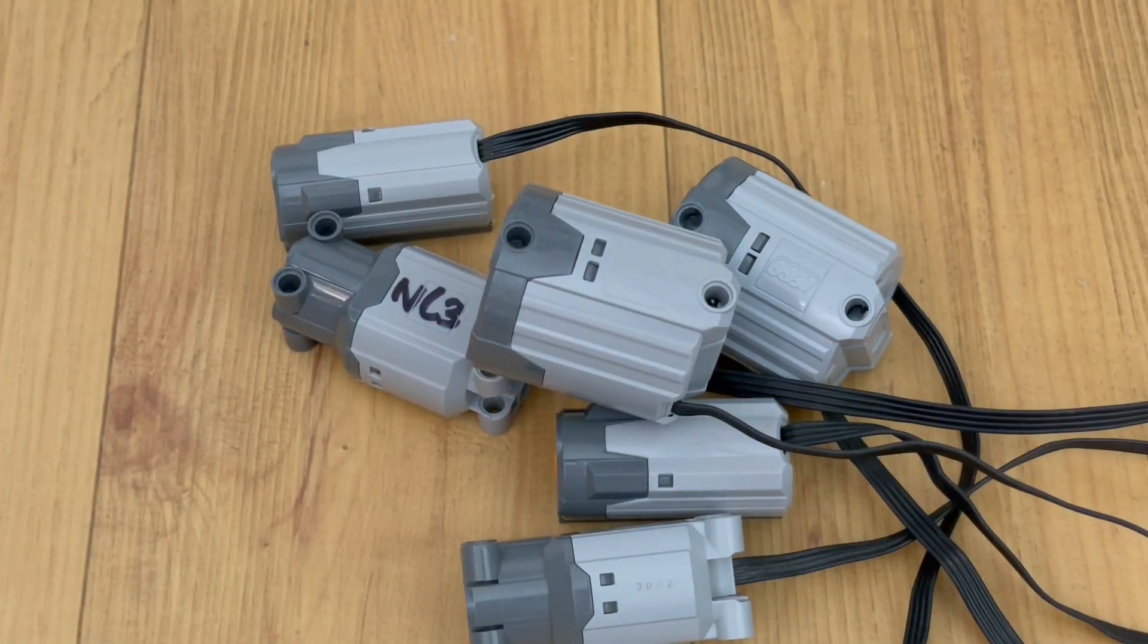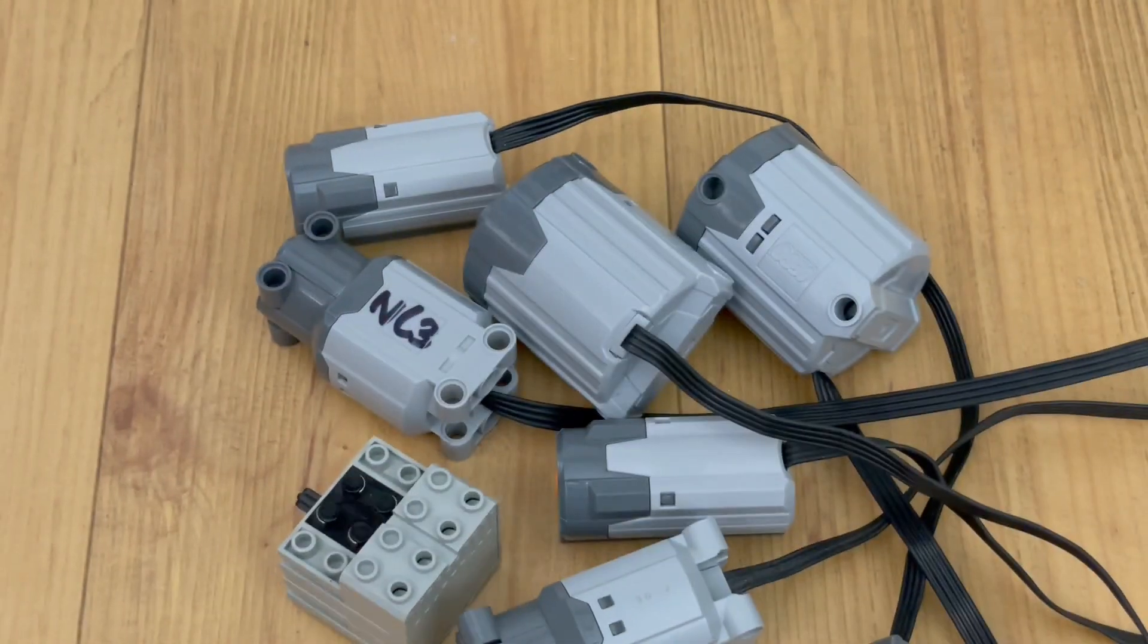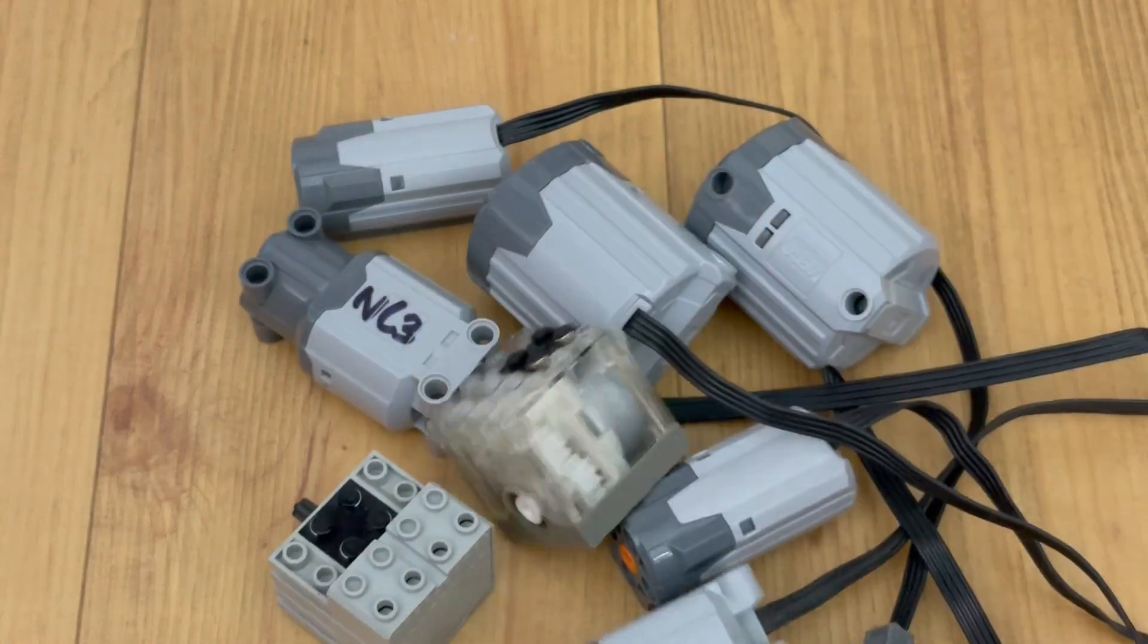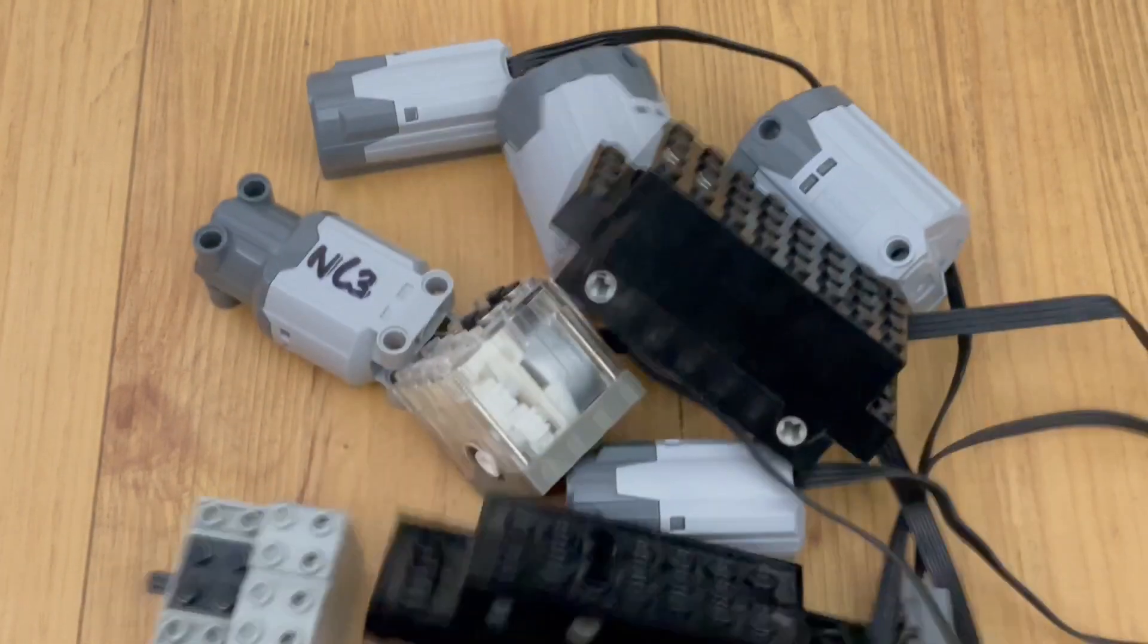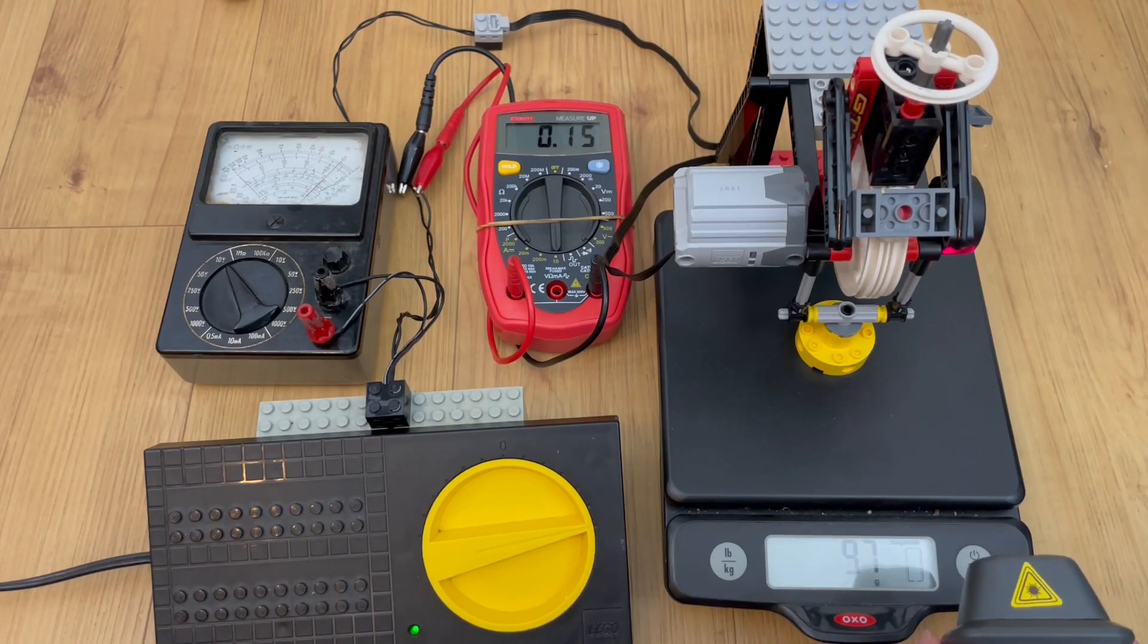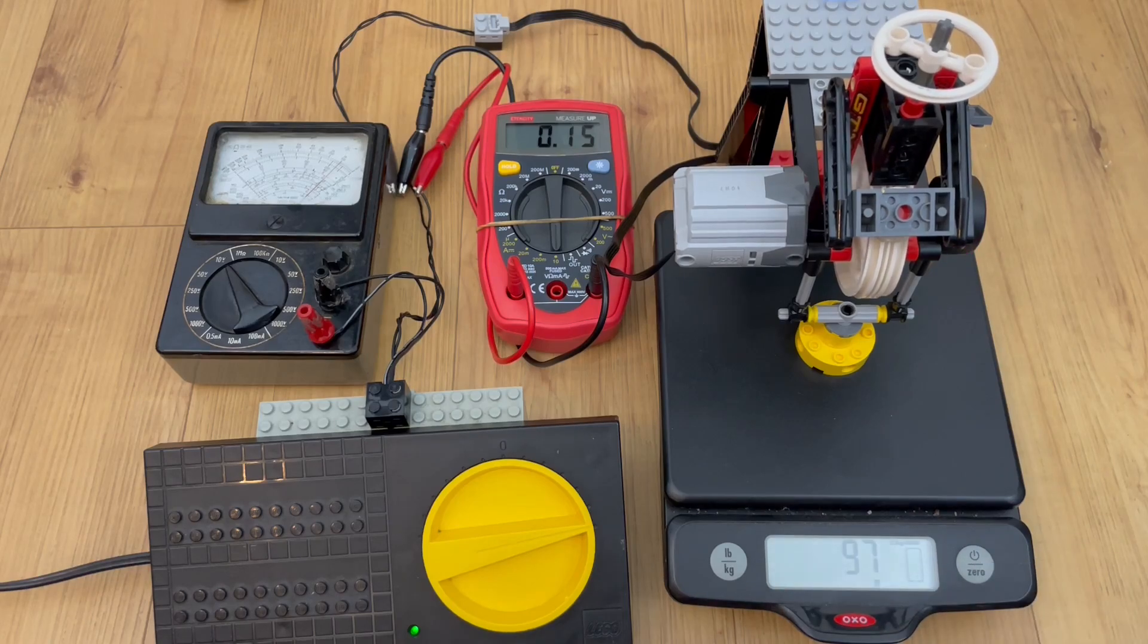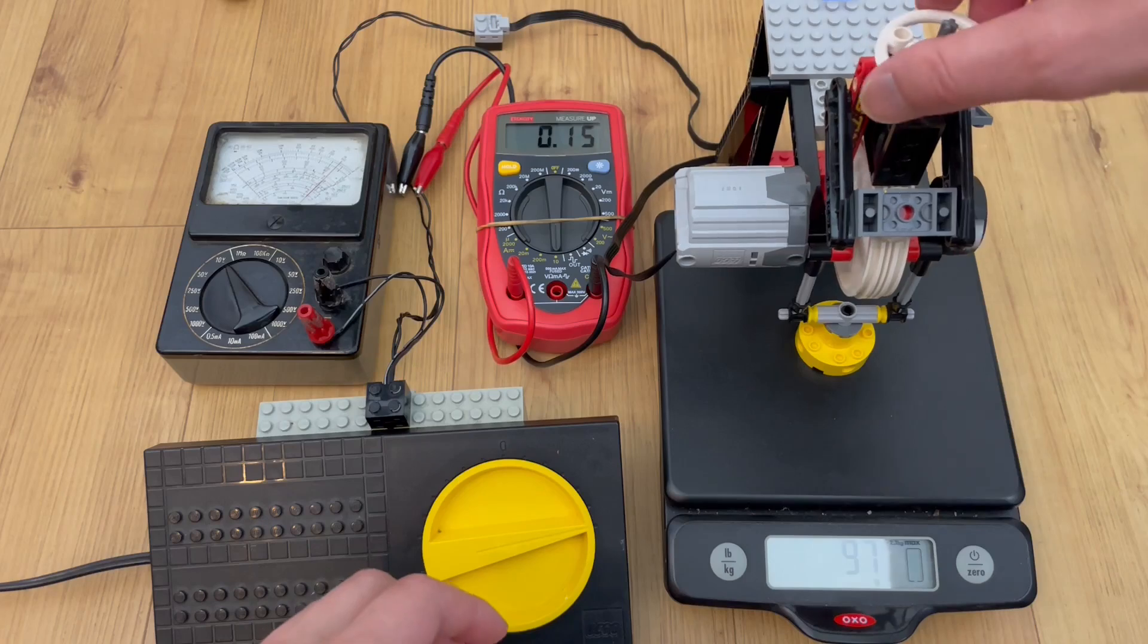The ratio of output to input describes the efficiency of a system. In this case, a motor that outputs 1 watt of mechanical power from 2 watts of electrical power has 50% efficiency.